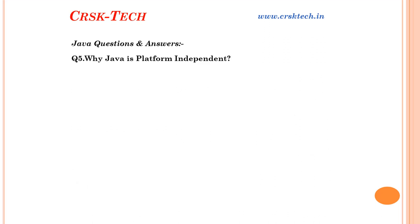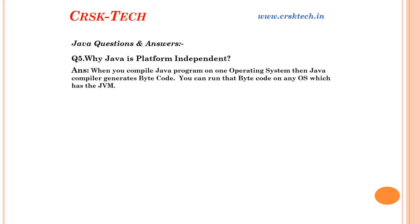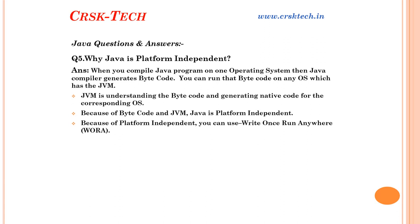Question number five: Why is Java platform independent? When you compile a Java program on one operating system, the Java compiler generates bytecode. Bytecode is common for all operating systems — you can run the bytecode on any operating system that has JVM. JVM reads the bytecode and converts it to machine code for the particular OS. Because of bytecode and JVM, Java is platform independent. That is why we say: write once, run anywhere.